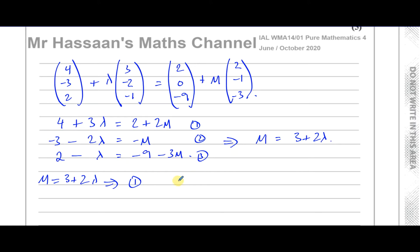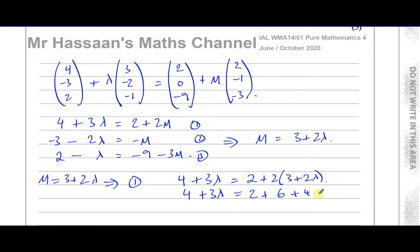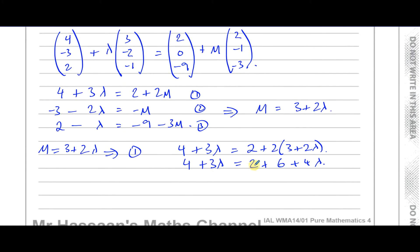So I have: 4 + 3lambda = 2 + 2(3 + 2lambda). Simplifying: 4 + 3lambda = 2 + 6 + 4lambda = 8 + 4lambda. Bringing lambdas to one side: 4 minus 8 equals lambda. So lambda equals negative 4.